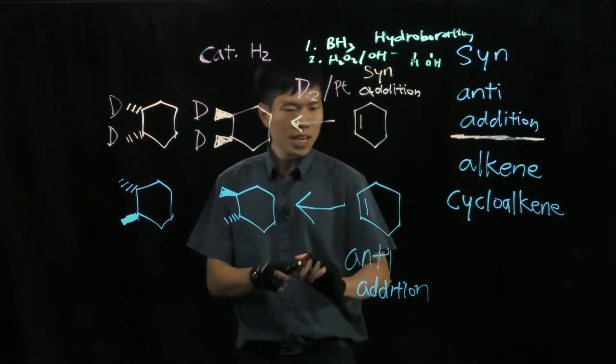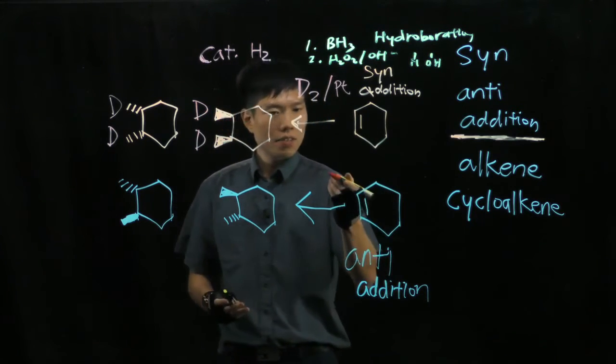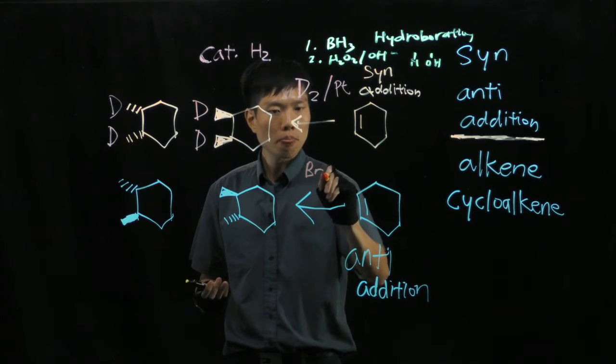Now for anti-addition, you have to remember, if I'm using a halogen like bromine, BR2, it must be anti-addition.